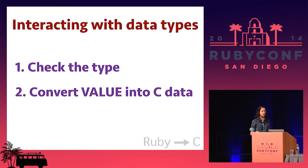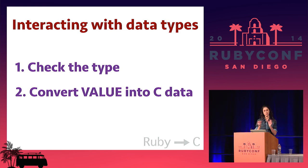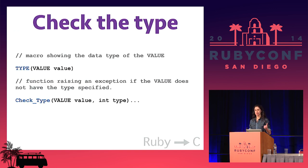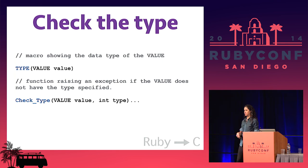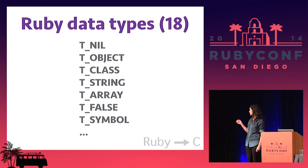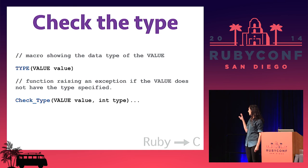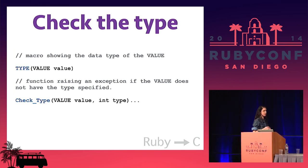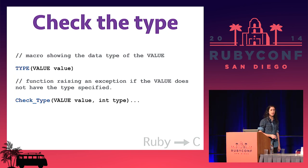There are two main ways to check the type. There's a macro called TYPE where you provide it a VALUE — the generic structure — and it gives back the integer corresponding to one of those constants. The other way is using a function that takes in the VALUE and an integer you want to check, and it will throw an exception if it's not the type you're expecting. So once you know the type, you know how to convert it into C data.